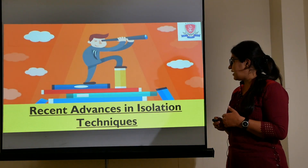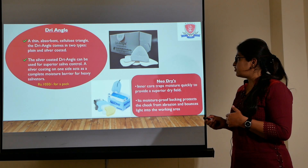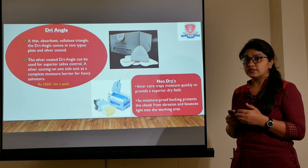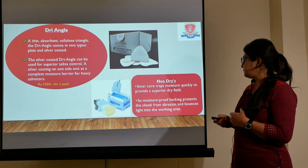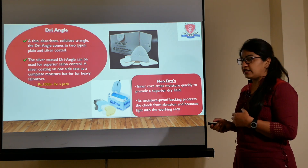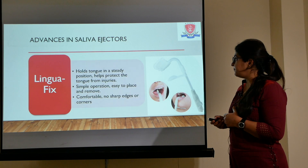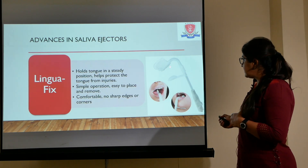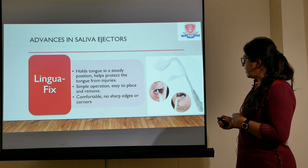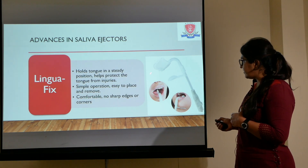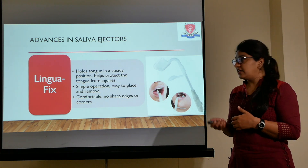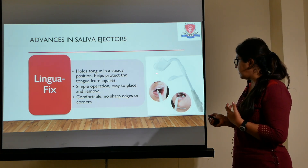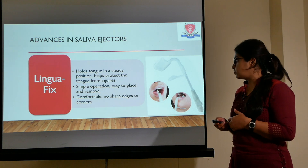There are certain advancements in isolation techniques. The Dry Angle has a silver coating on one side that helps in complete moisture control. Neodry is also very effective in absorbing moisture. Then the saliva ejector Lingua Flex — it has a tongue-like attachment that helps in retraction and simultaneous evacuation, serving two purposes at a time, and because of its blunt edges, it does not cause any injury to the patient.